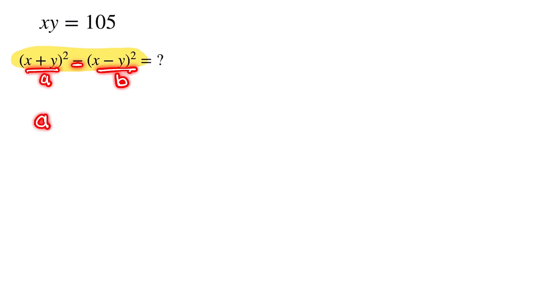The identity a² - b² is equal to (a+b) into (a-b). So now we put this value in this equation.